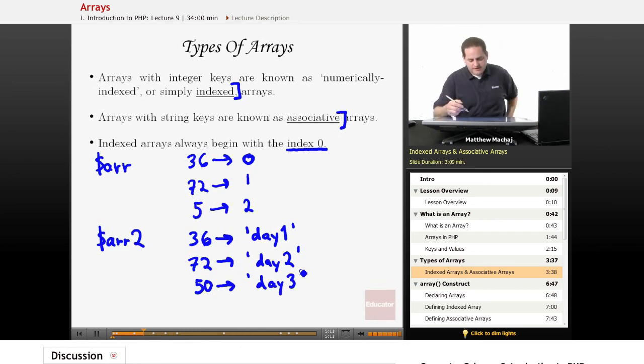So now in order to access this first piece of data, 36, let's say these were temperatures during particular days of a week, we would access this using the key day one. So the string day one refers to the piece of data 36. Day two refers to 72, and day three would refer to 50.